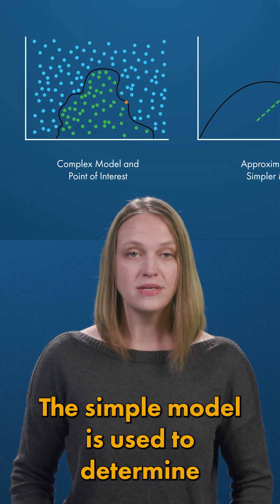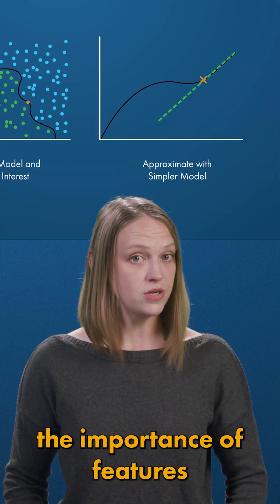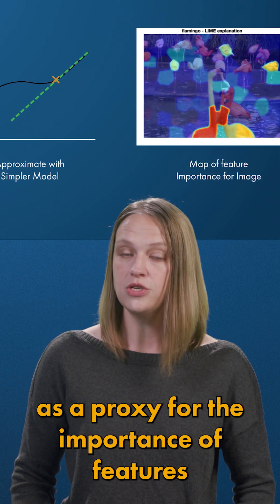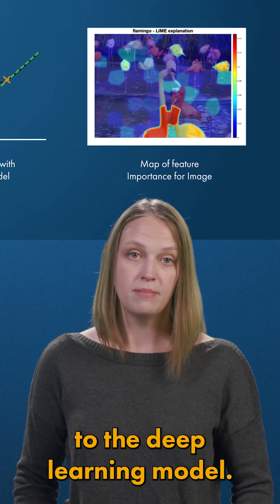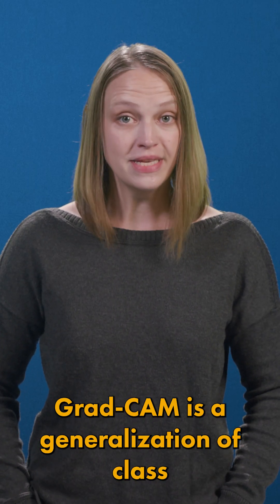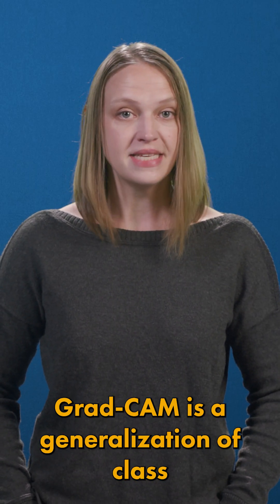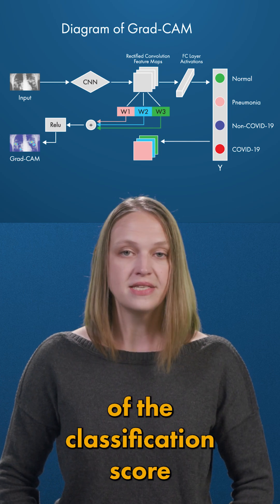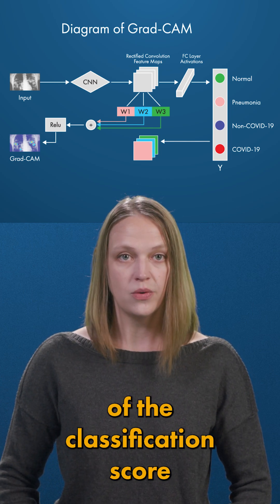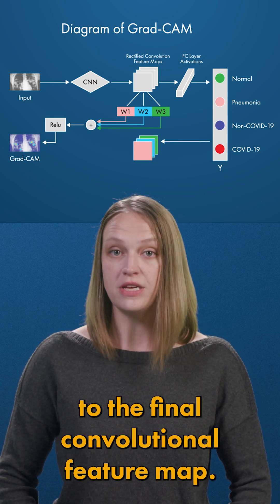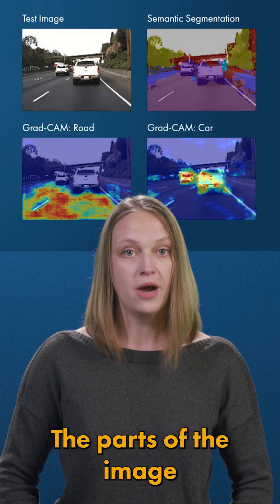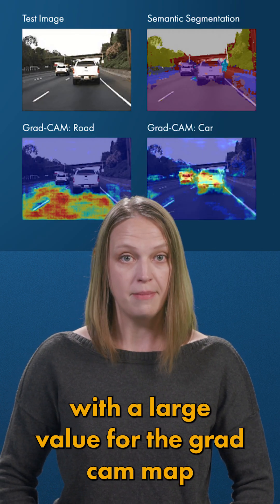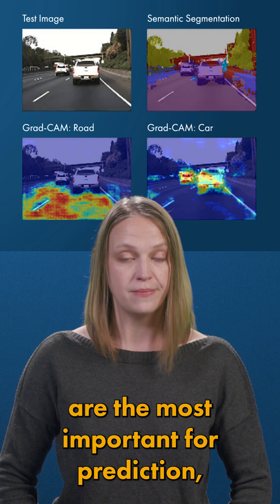The simple model is used to determine the importance of features of the input data as a proxy for the importance of features to the deep learning model. GradCam is a generalization of class activation mapping. It uses the gradients of the classification score with respect to the final convolutional feature map. The parts of the image with a large value for the GradCam map are the most important for prediction.